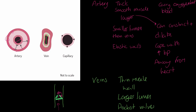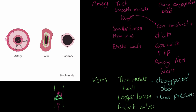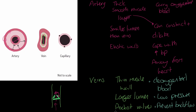Let's go through the functions of veins formally. They carry deoxygenated blood — the exception being the pulmonary vein. They deal with blood at low pressure — because they're furthest away from the heart. They return blood back to the heart. And they're there to prevent backflow — that's a really important word. Just as heart valves prevent backflow in the heart, these pocket valves in veins prevent backflow too.